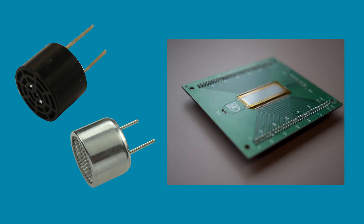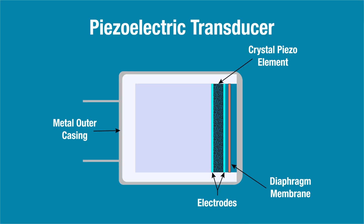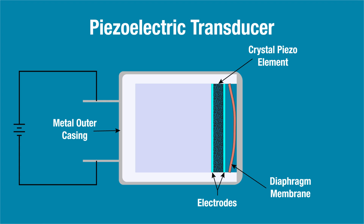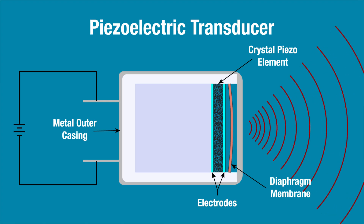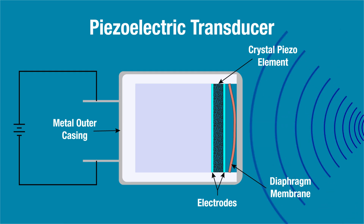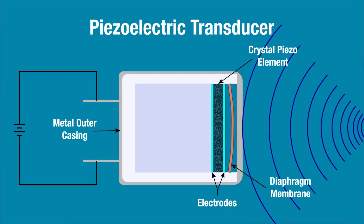Ultrasonic transducers typically function in one of two ways: piezoelectric or capacitive. I've talked about piezoelectric devices before in previous Learning Circuit videos, like with microphones, speakers, and accelerometers — you can find links in the description below. Piezoelectric devices use a crystal substance that, when a charge is introduced, causes the particles to rearrange, making a membrane or diaphragm flex back and forth very quickly. In ultrasonic sensors, the diaphragm movement can either generate ultrasonic waves or vibrate in response to received waves and translate that energy into electrical signals.